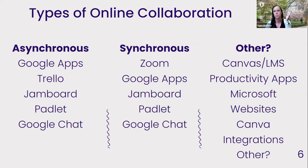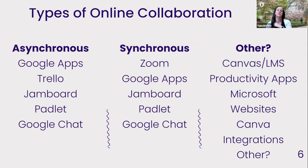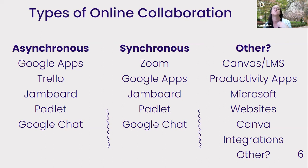Some other things that come up when you talk about online collaboration — things we could have whole sessions on — are Microsoft, of course a competitor to Google, but we're going to focus on Google today. Our learning management system Canvas — again we could have whole sessions on that. There are tons of productivity apps that function like Trello — Trello is one of many. We can do a comparison; I'd love to hear y'all's opinion. Trello is just what I use the most.